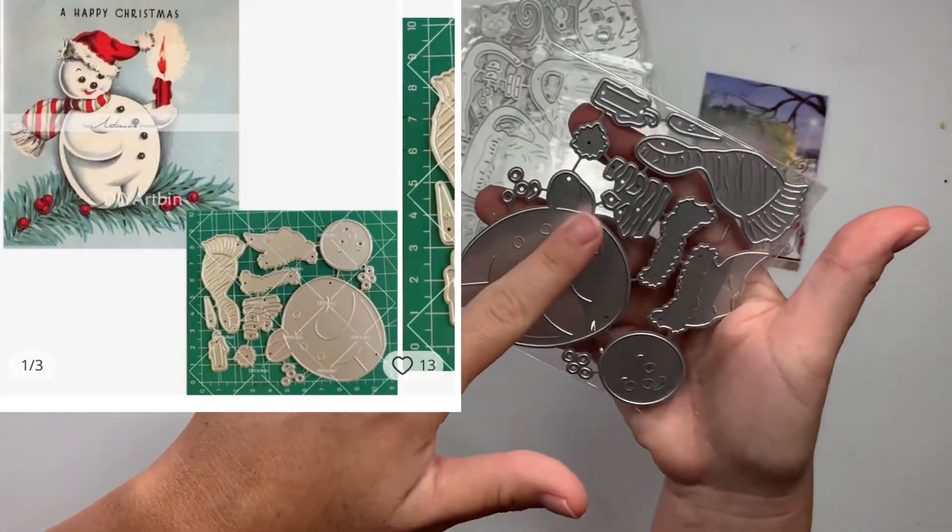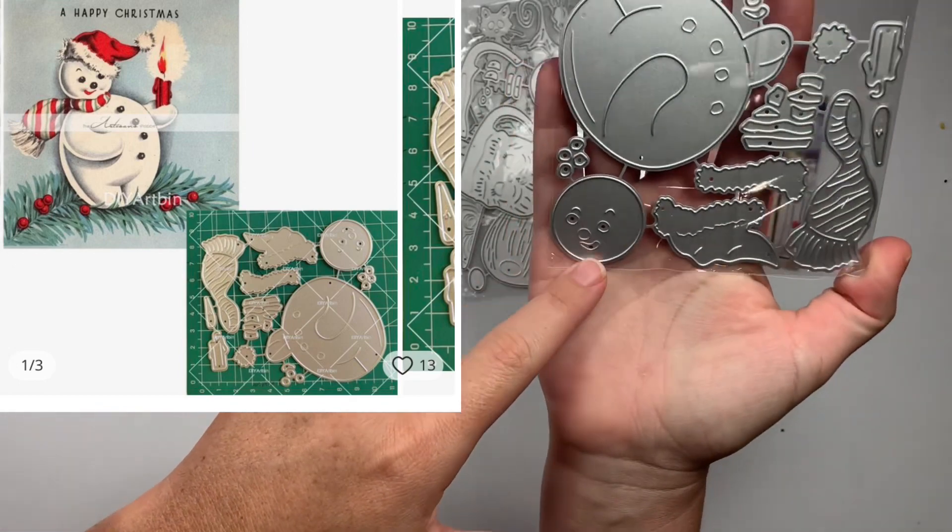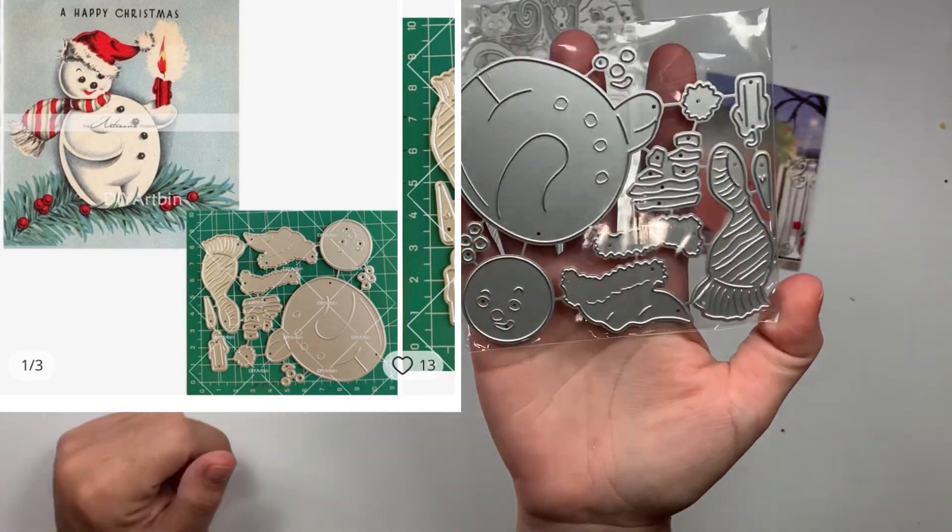This one is a little snowman. So here's his big fat body. You can see his little legs, his little face, his hat, his scarf, all the layering pieces.